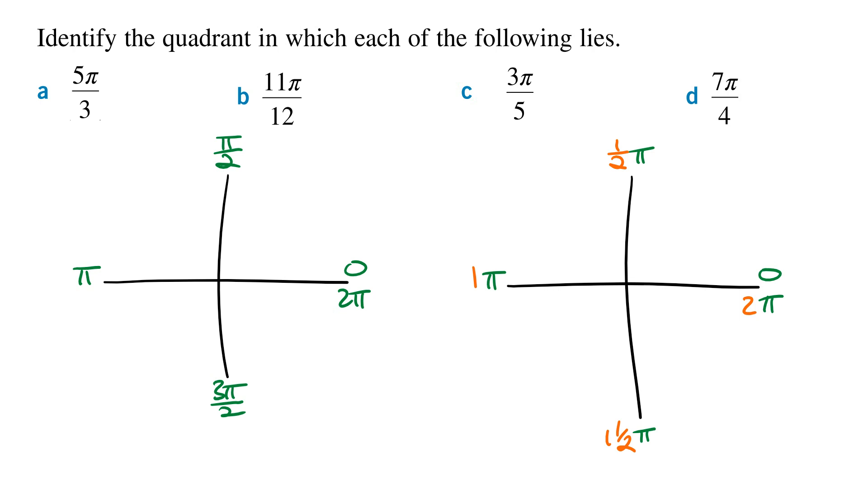And so starting with part A, we want the quadrant where 5π/3 lies. And so the first thing we want to do is look at the number part, which is 5/3, and we want to rewrite this in proper fraction form. And so 5/3 written in proper fraction form is the same as 1 and 2/3, and then we write the π.